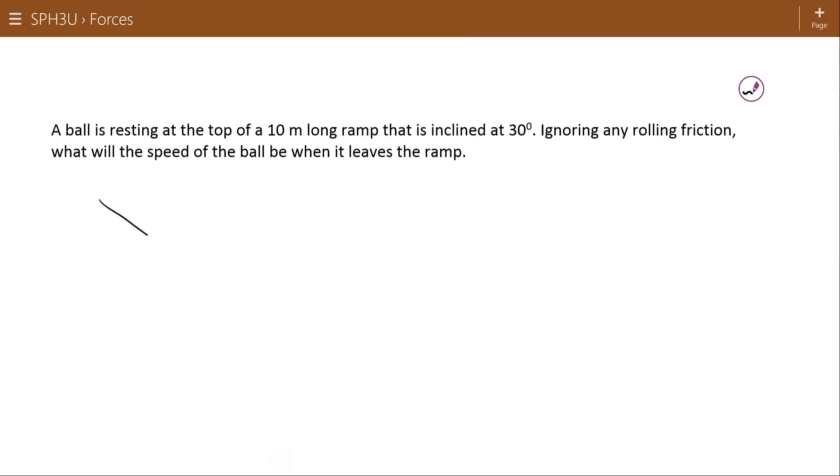So let's do a couple simple problems with that and we'll work our way through. Here we have a 10 meter long ramp. Ball's resting at the top of the 10 meter long ramp and it's inclined at 30 degrees. Ignoring any rolling friction, what speed will the ball be when it leaves down the ramp? Now, like a lot of these problems, I didn't actually give you a mass for the ball, so we'll just call it M. This is a good rule of thumb, especially with mass. If you feel like you need it and you don't have it, you probably don't need it.